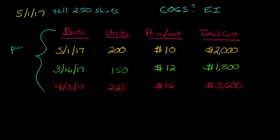We see that on March 1st, we bought 200 t-shirts at a price of $10 a shirt for a total of $2,000. On March 16th, we bought 150 shirts for $12 a piece. And then on April 3rd, we bought another 225 shirts for $16 a pop.